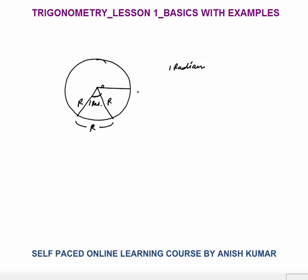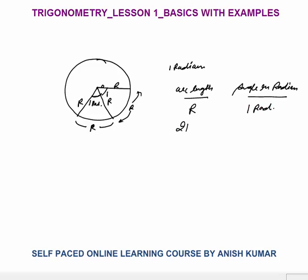If you take another arc of length R, the radius is still R, so that angle will also be one radian. Now the total angle we have is two radians. So the relationship is: arc length divided by radius gives the angle in radians. If arc length is 2R, the central angle is two radians; if 3R, three radians.